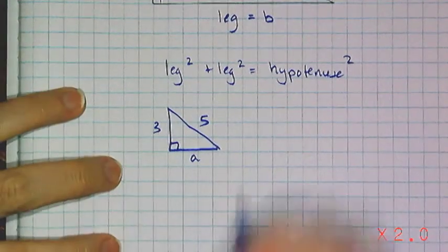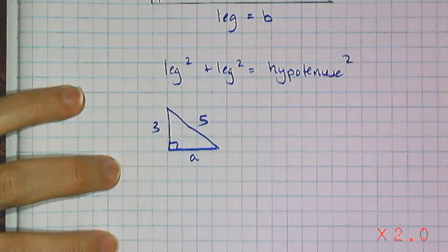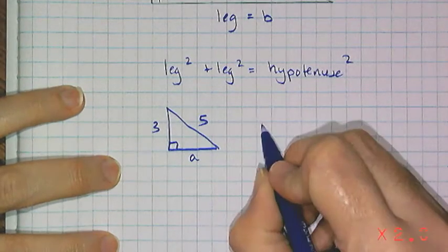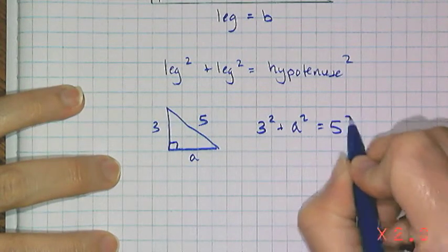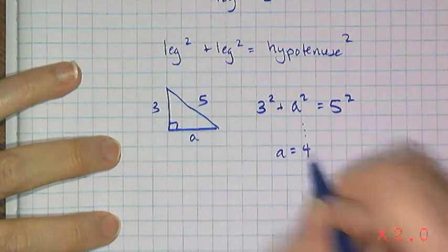And so in this case, we're trying to find the length of a leg. And I can set up the numbers into the formula that Pythagorean Theorem gives us. So leg length of 3 plus some other length equals hypotenuse's length. And then we can go ahead and solve and figure out that a has to equal 4.